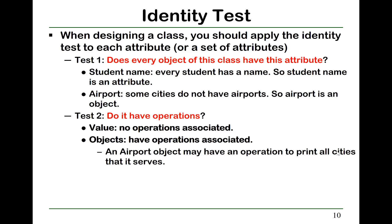So when we design a class, we should apply the following identity tests to each attribute or set of attributes. Test one: does every object of this class have this attribute? For example, every student has a name, so student name is an attribute. But some cities do not have airports, so airport is an object, not an attribute of a city. Test two: does it have operations? Values have no operations, but objects do. For example, an airport object may have an operation to print out all the cities that it serves.